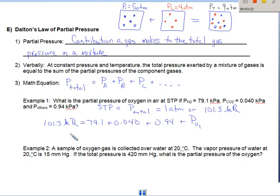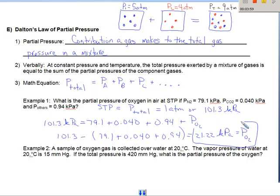So it's just a matter of taking the 101.3 kPa and subtracting all the other ones. So we take all of these 79.1 plus 0.040, plus 0.94, equals 21.22 kPa. And remember, that is the partial pressure of the oxygen. Right there. Let's box it so that we know that's the final answer.